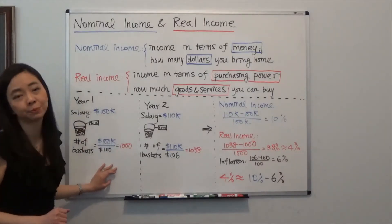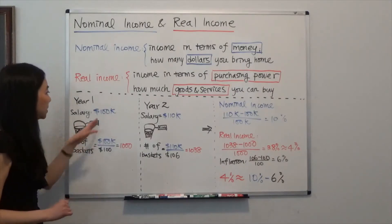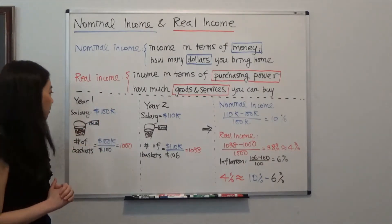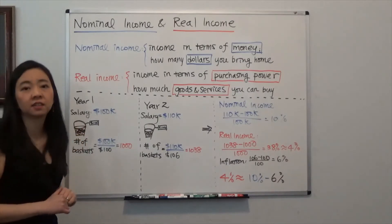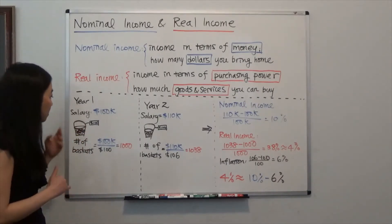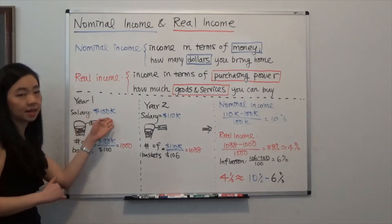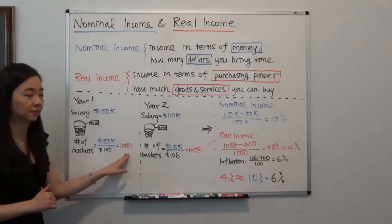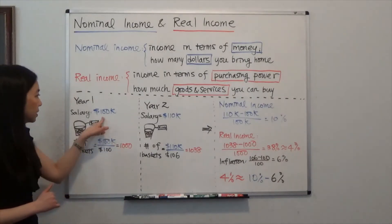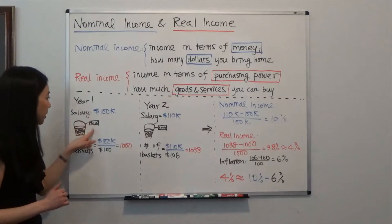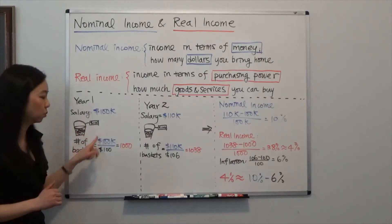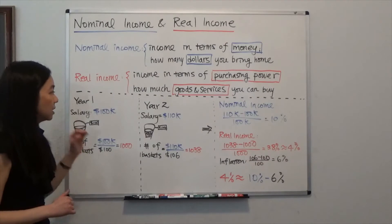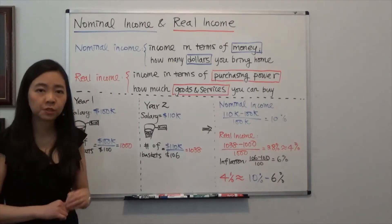Now we're going to use a very simple example to explain. Suppose in year 1 your salary is $100,000 and the price of a basket is $100. That means with your salary you can afford to buy 1,000 of such baskets, because $100,000 divided by the price tag $100 will give you 1,000 baskets.